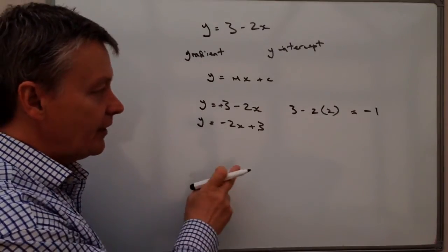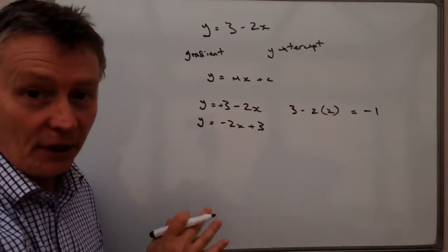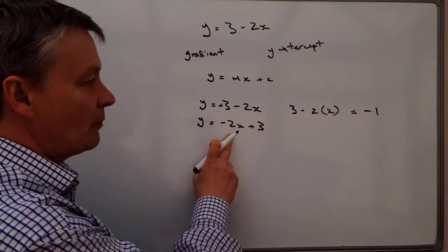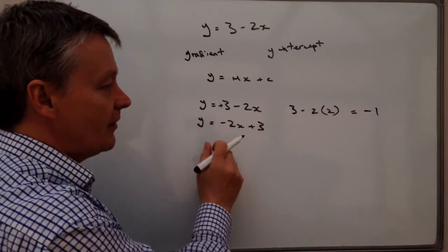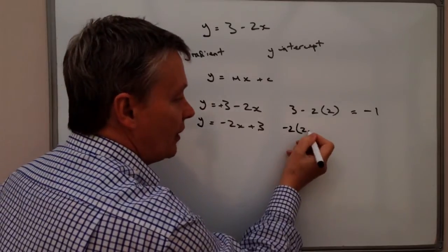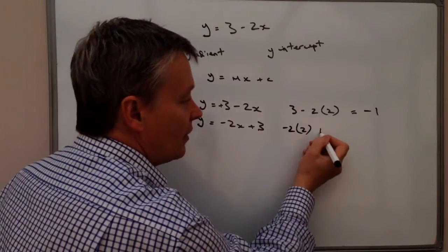So providing this comes out as being minus one also, then it would mean that the two equations are the same. So what I'll do is I'm going to put two again into this. So I've got minus two multiplied by two plus three.